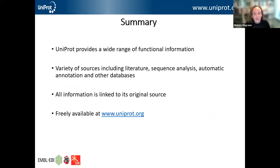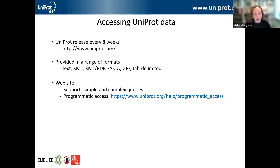To summarize: UniProt provides a wide range of functional information from a variety of sources, including scientific literature, sequence analysis programs, various automatic annotation systems, and information imported from other databases. All of the information is linked back to its original source so you can tell whether information has come from the scientific literature or from an automatic annotation method. All of the information is made freely available from the UniProt website at uniprot.org. The release happens every eight weeks and data is provided in a range of formats. The website supports both simple and complex queries, and it's also possible to access the data programmatically.